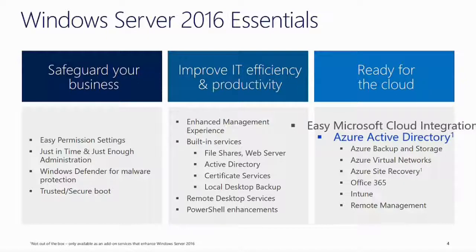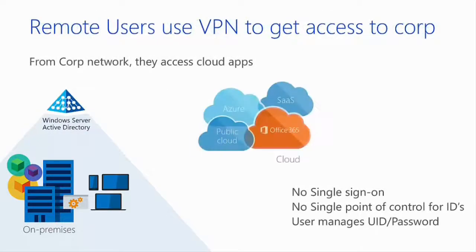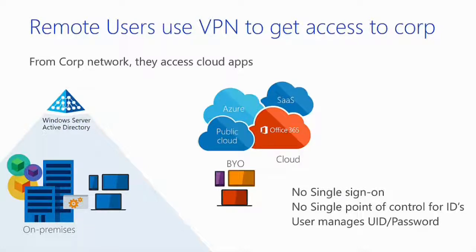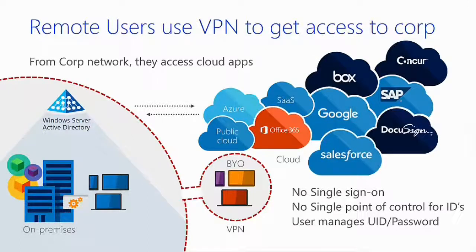Starting with Active Directory on premises, users authenticate only against the local Active Directory. If you have cloud environments, remote users would use VPN to get access to the corporate network, and from that VPN they would then go and access cloud properties. In this scenario, there's no real single sign-on and no single point of control for user IDs and passwords — users manage their own credentials for each SaaS application.